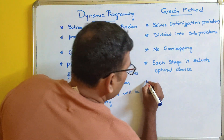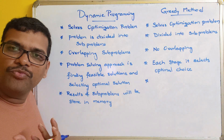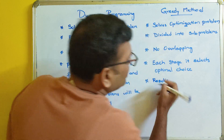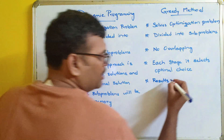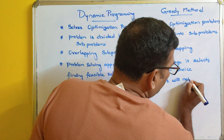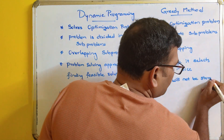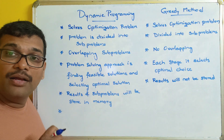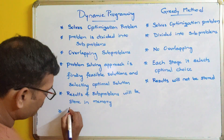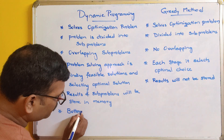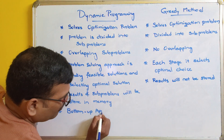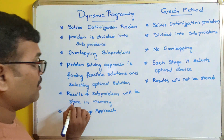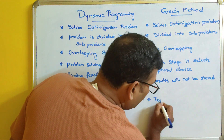In the greedy method, there is no option of backtracking and results are not stored in memory, because there is no overlapping. Dynamic programming follows a bottom-up approach, whereas greedy method follows a top-down approach.